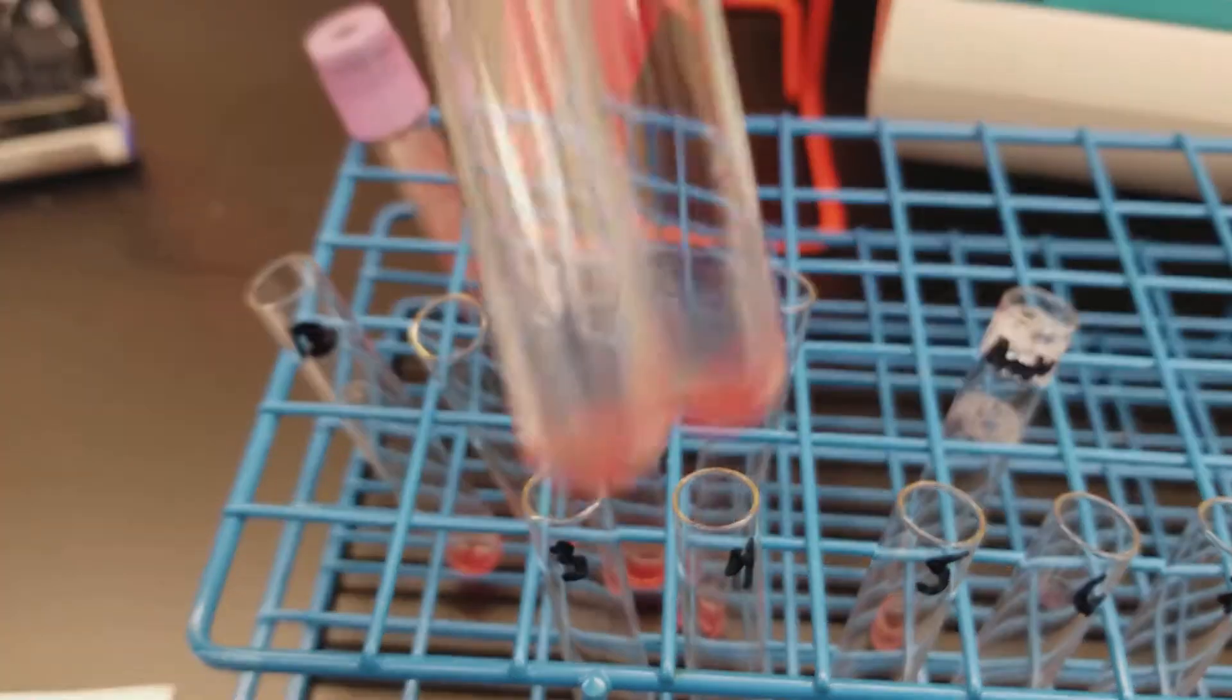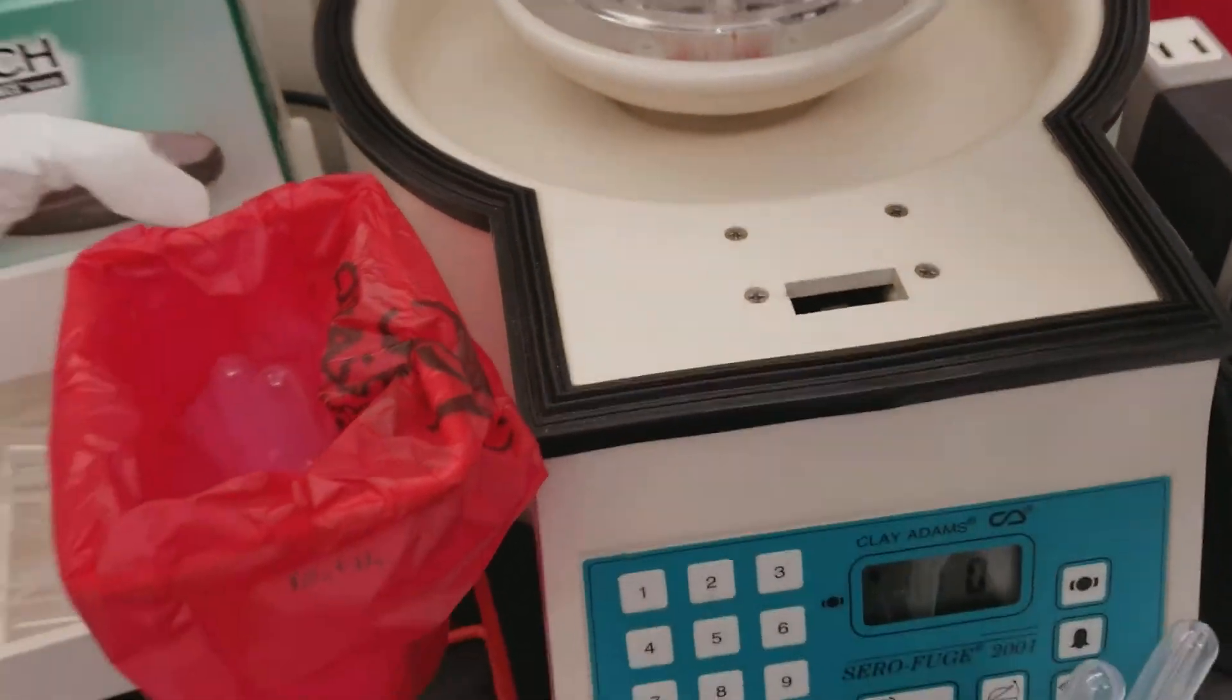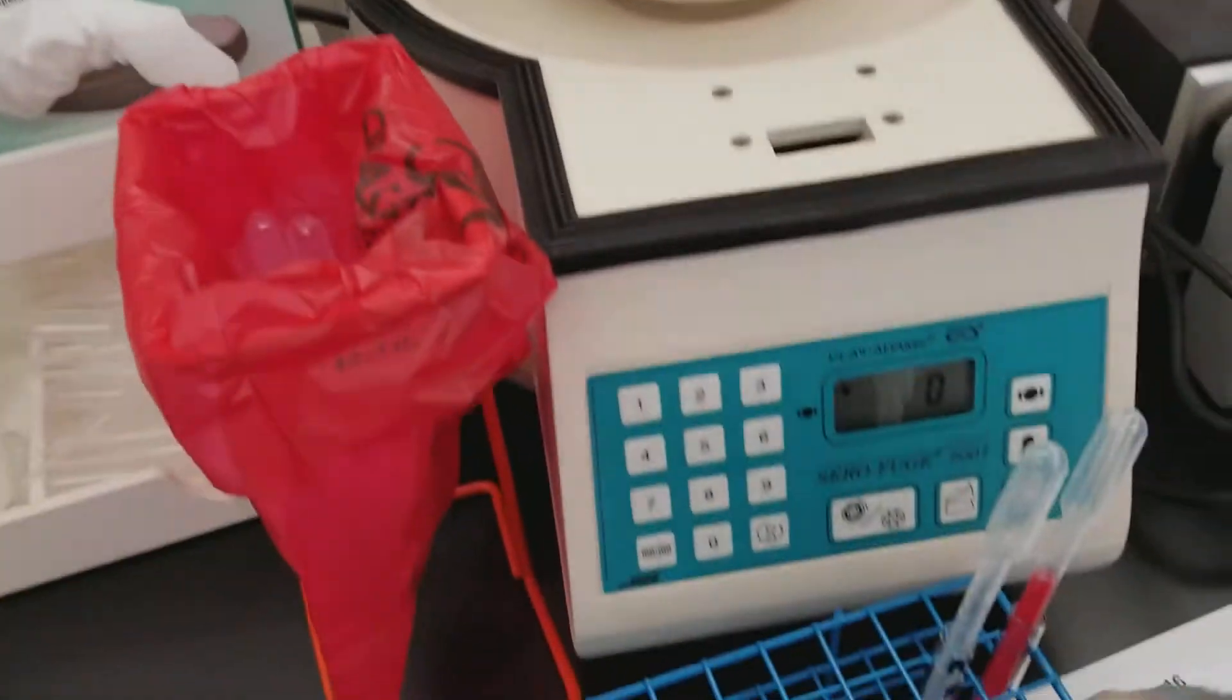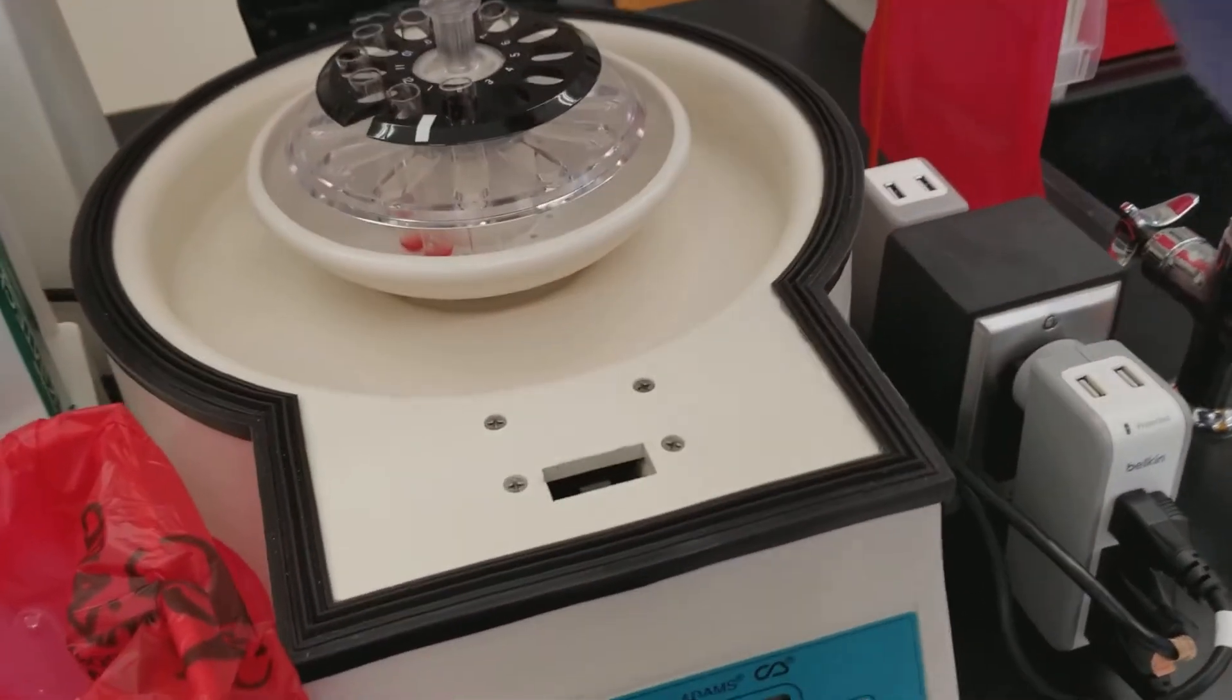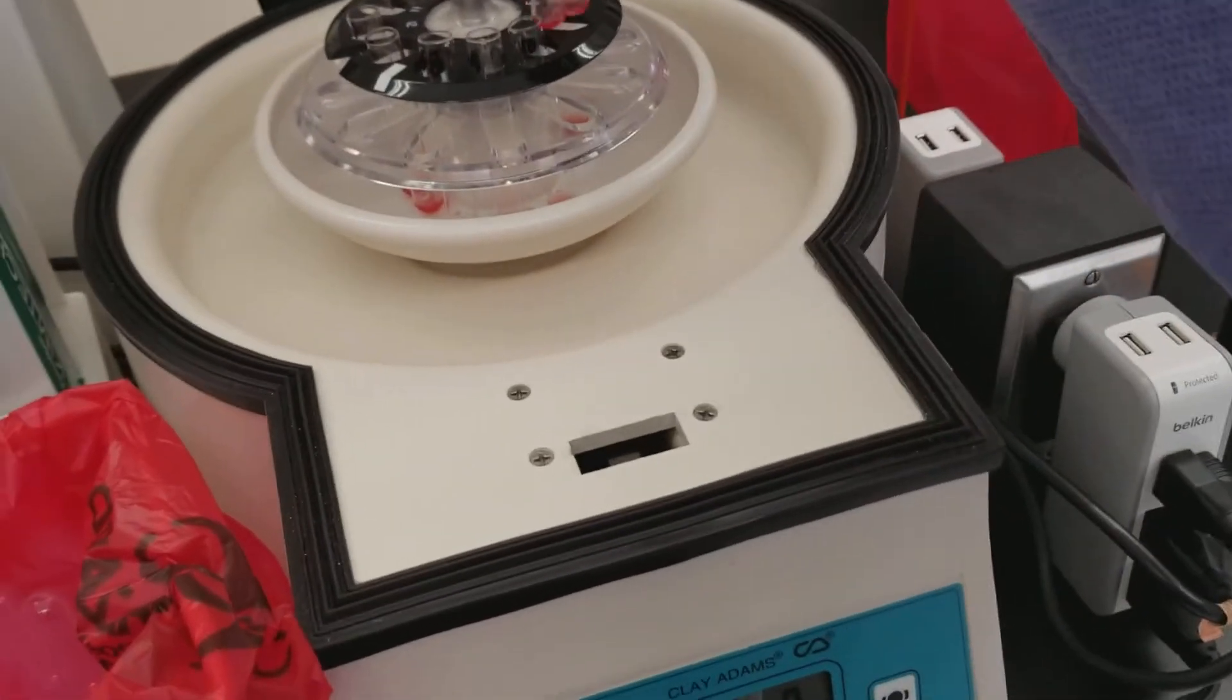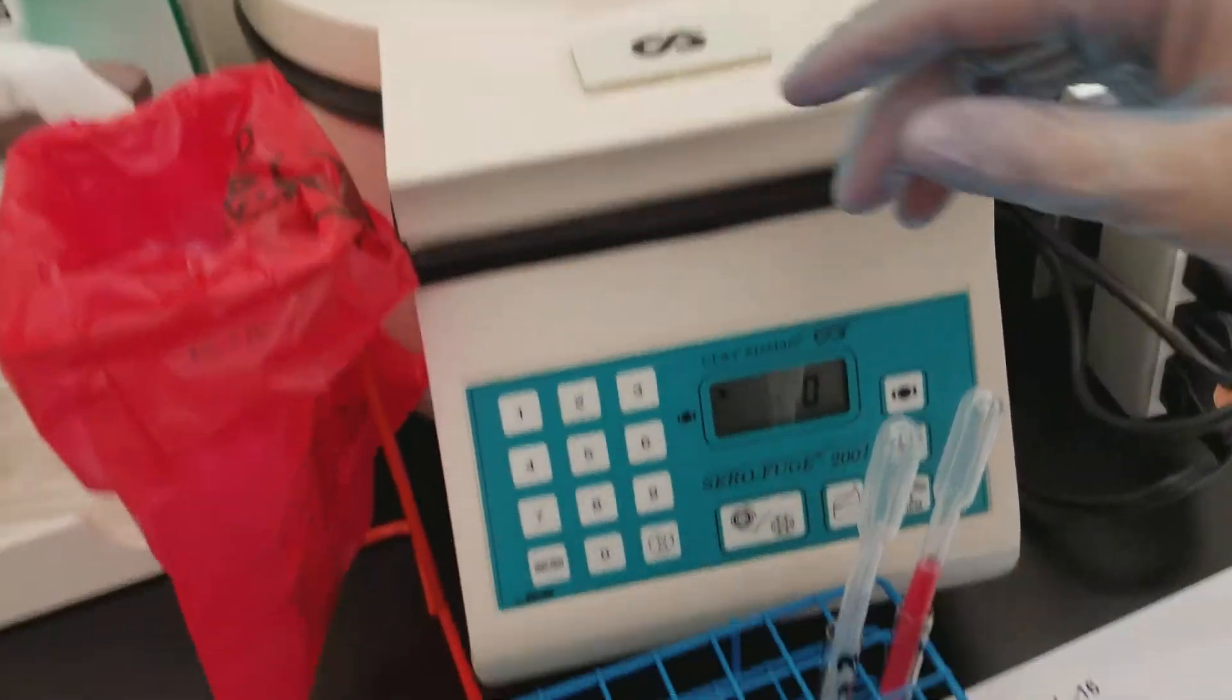We're going to now shake them a little bit very gently and put them into the centrifuge. And again, we're going to have to use two centrifuges because of how many tubes we have. I'll load the other one too off camera.